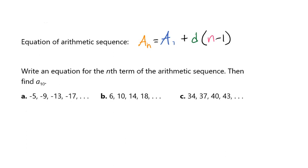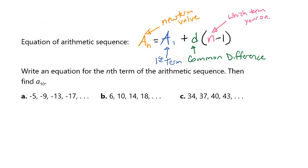So what do all these pieces mean? Our a sub n is the new term value that we're looking for. It's kind of like the y equals. Our a sub 1 is going to be the first term of the sequence, d is our common difference, and the n is what term you're working on. So that's kind of like the x value.